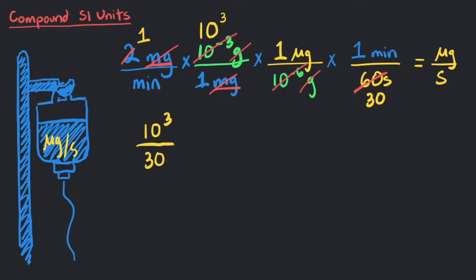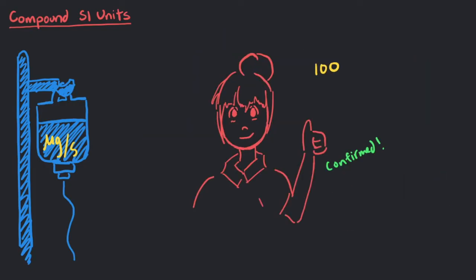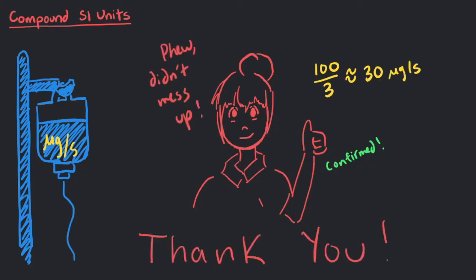This leaves us with 10 to the power 3 over 30. Dividing by another 10 on both the numerator and the denominator, we can simplify the answer to 10 to the power 2 over 3, also written as 100 over 3 micrograms per second. The doctor confirms that 100 over 3, which is about 30 micrograms per second, is safe for Lily. Thank you for your help.